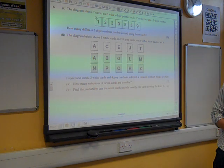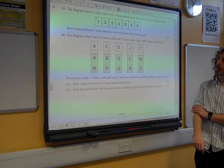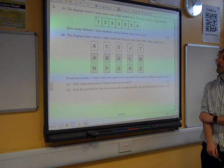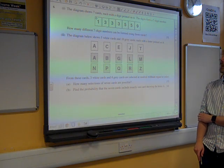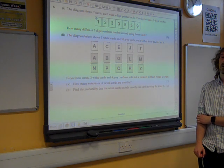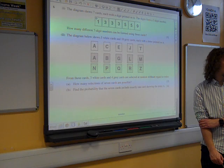So question six is a permutations, combinations, arrangements question. It starts with seven cards, each with a digit printed on it, forming a seven-digit number. How many different seven-digit numbers can be formed using these cards?